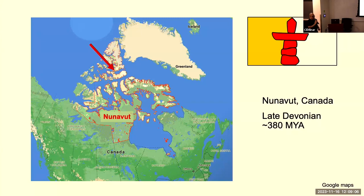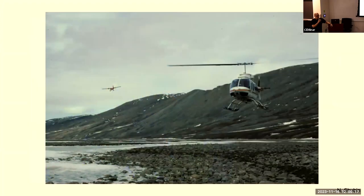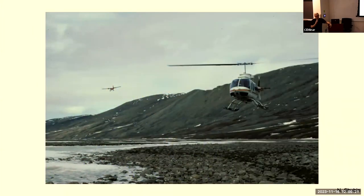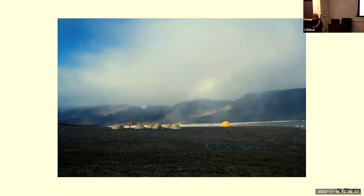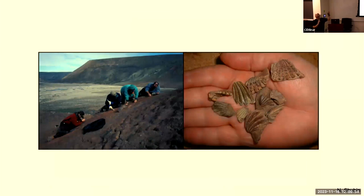The reason they went was because on Ellesmere Island there are exposures about 380 million years old — exactly in the window where you hope to find animals filling the gap, in what would have been a tropical floodplain environment. It was targeted both geologically and ecologically. In the field, you're dropped off by helicopter at a Canadian military base and left for the summer with 24 hours of sunlight. You hike up and down ridges looking for little bits of bone and fossil exposed on the surface.